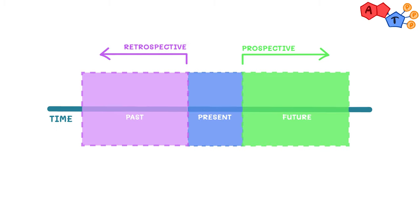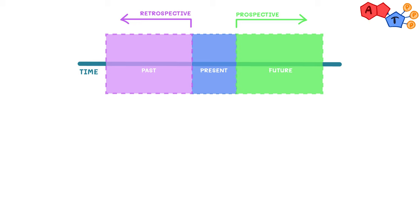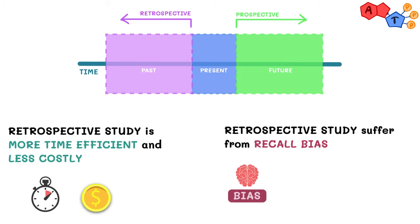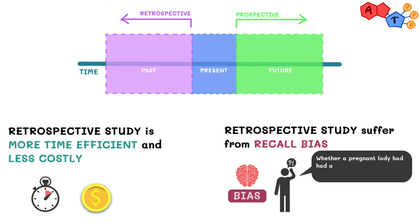They don't differ much on board exams, but in real-life practice, retrospective is more time efficient, less costly, but it suffers from the fact that you can only trust what has been documented, or might be facing recall bias which is simply to depend on a person's own memory to collect data. For example, whether a pregnant lady has had fever in the first three months of her last pregnancy. I personally wouldn't recall exactly, but luckily I can't get pregnant. Also, simply because someone hasn't been documented to be a smoker doesn't mean he isn't.